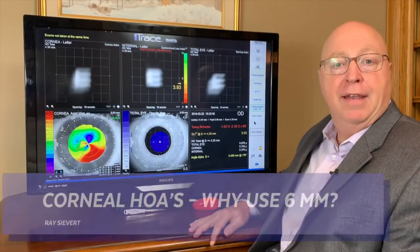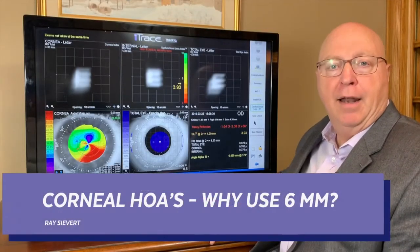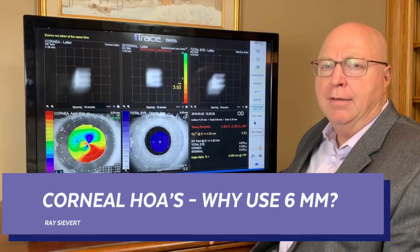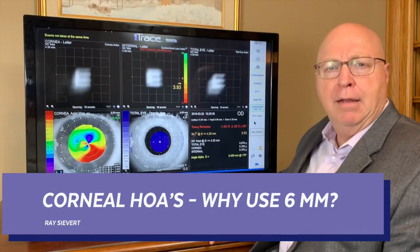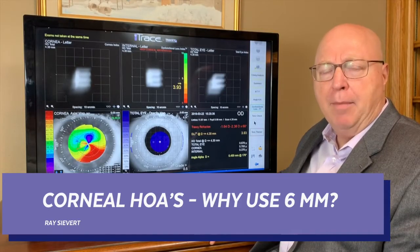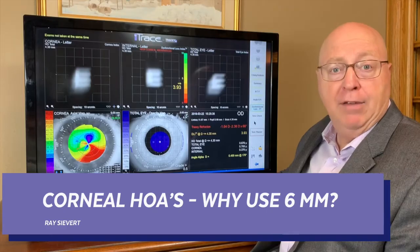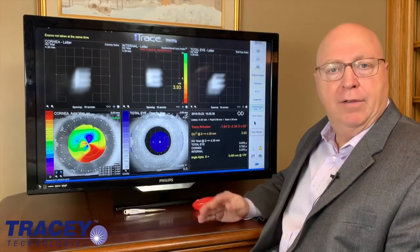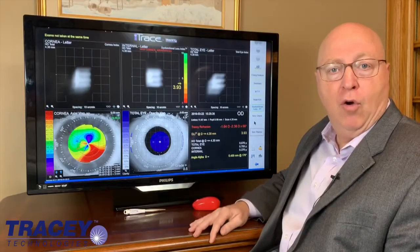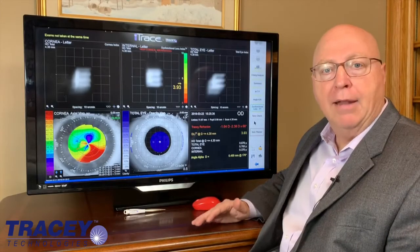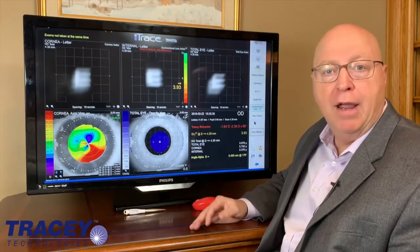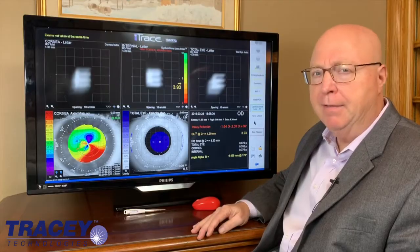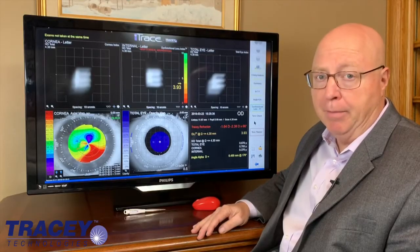Hi, Ray Sievert with Tracy Technologies. We have an interesting case today that taught me a lot about the industry standard. We typically use six millimeters of cornea to look at spherical aberration and high order aberrations and other things. But is that the right number?